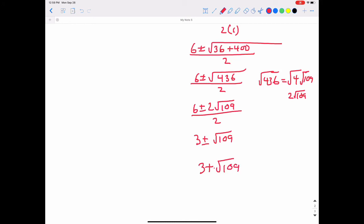If we wanted to estimate that, we could just take the square root of 109. And the square root of 109 is approximately equal to 10.44. So 3 plus about 10.44, and that's about 13.44. All right. Thank you.